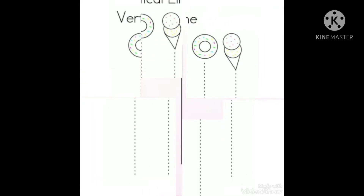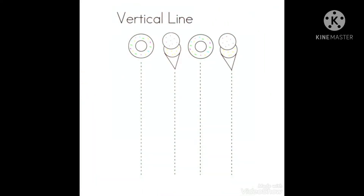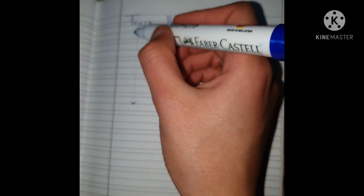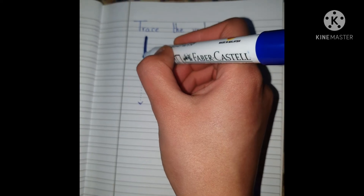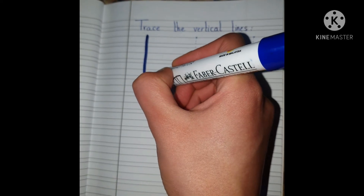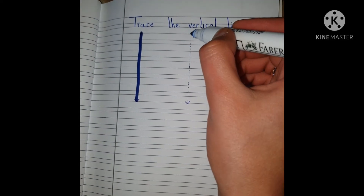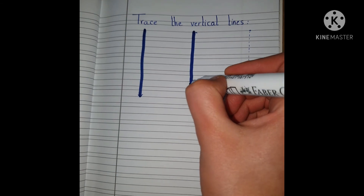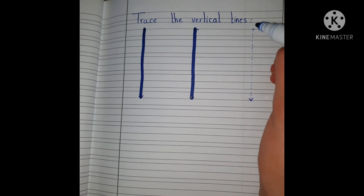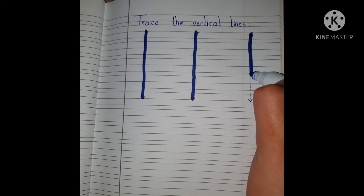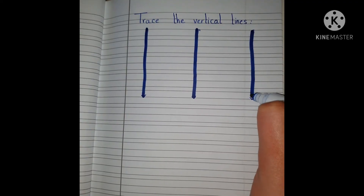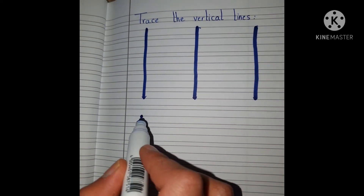Now let's see how to trace the vertical line and draw some vertical lines. Let's trace the vertical line — start at the top and go down on the dots. Let's try it again: up, down.